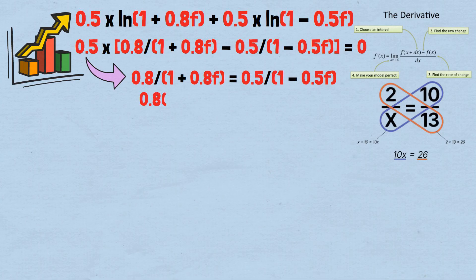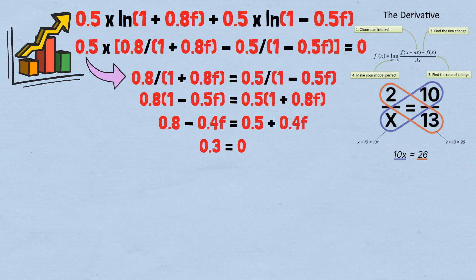Cross multiplying and solving. 0.8 times 1 minus 0.5 F equals 0.5 times 1 plus 0.8 F. 0.8 minus 0.4 F equals 0.5 plus 0.4 F. 0.3 equals 0.8 F. F equals 0.375. So the optimal fraction is 37.5% of our wealth.